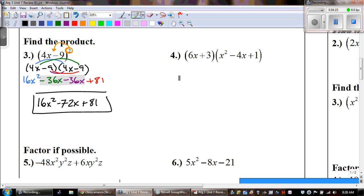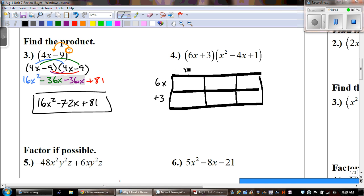Number 4. Once again, we're going to distribute. And I'm going to use the box method here. I have a binomial times a trinomial. So, I'm going to put my binomial on the side. And then the x squared minus 4x plus 1. And now we're just going to go ahead and multiply 6x times x squared gives us 6x cubed. 6x times negative 4x is a negative 24x squared. 6x times 1 gives me a positive 6x. 3 times x squared is a positive 3x squared. Positive 3 times negative 4 is a negative 12x.